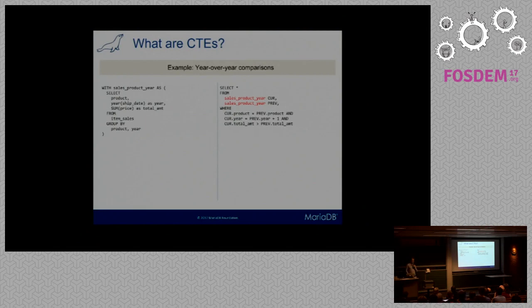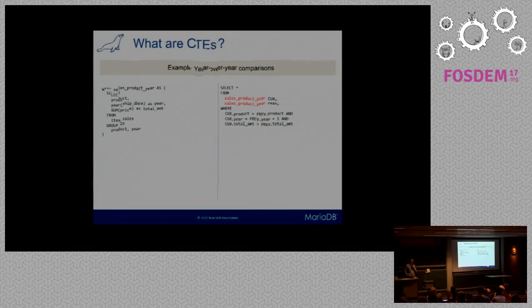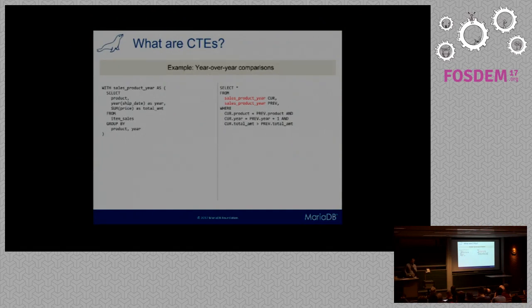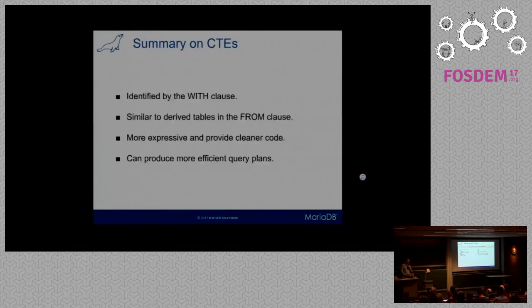One use case example is, say you are part of the sales division and you want to see which products have performed better this year as opposed to last year. We can do this by defining first a table expression with all the products and all the sales for that product, grouped by year. And then we can just join this table with itself. See here that we are referencing the common table twice. This will give you all the products which have performed better than the previous year.